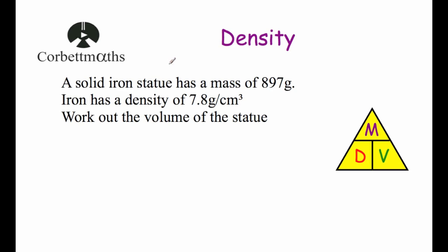Our second example: a solid iron statue has a mass of 897 grams. Iron has a density of 7.8 grams per centimeter cubed. Work out the volume of the statue. Volume equals mass divided by density. Before substituting numbers, we need to make sure we have the correct units. Our density is in grams per centimeter cubed, so it's important that our mass is also in grams — and it is.